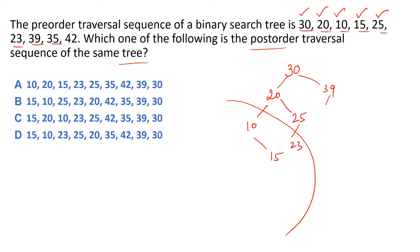35 ko 39 ke left mein laga dijiye — properties abhi valid hain. 42 ko 35 ke right mein nahi laga sakte kyunki yeh binary search tree ki condition ko violate karega. 39 ke left subtree mein elements 39 se chhote hone chahiye. Isliye 42 ko 39 ke right mein laga dijiye.